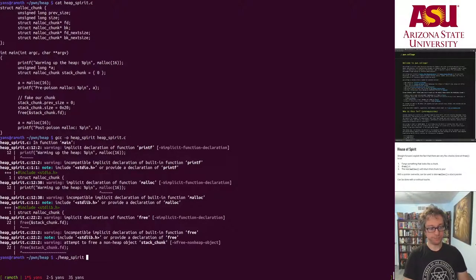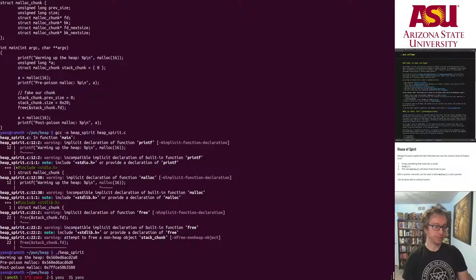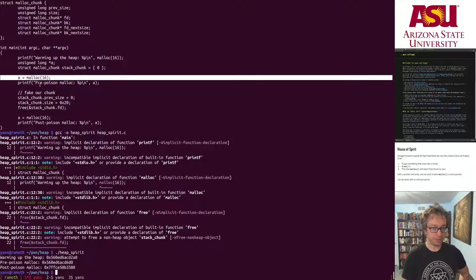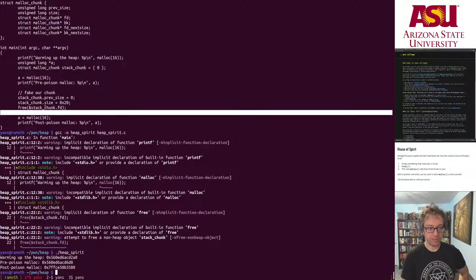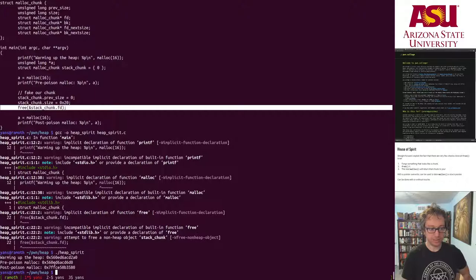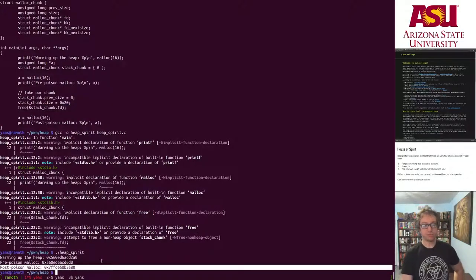Run it. Boom. First allocation, another allocation just to keep things in. So this is that first allocation that we made on the heap right here. And then after we poison the cache right here, you can see that the next allocation returns a stack address right now.